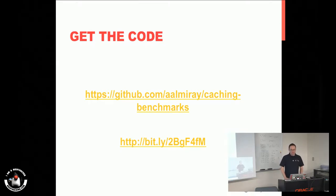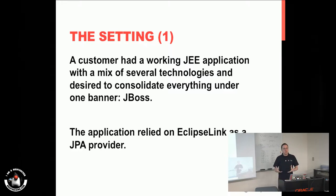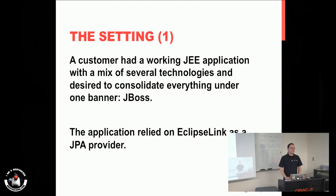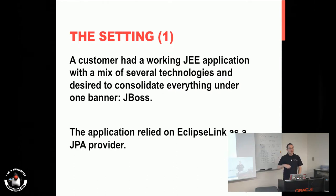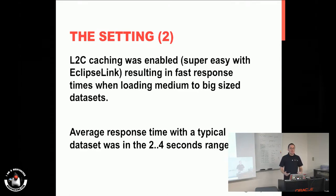The setting is the following: I was working with a customer and they had a big standard JEE application running on WebSphere or WebLogic — one of those older platforms. They wanted to consolidate everything on one provider, and they chose JBoss. They needed to migrate from EclipseLink to Hibernate, and they found that EclipseLink was giving them a lot of benefits with the caching support it provides out of the box. But with Hibernate, you have to configure caching yourself, and there are many ways to do it with many different providers, so we didn't know exactly which one to pick.